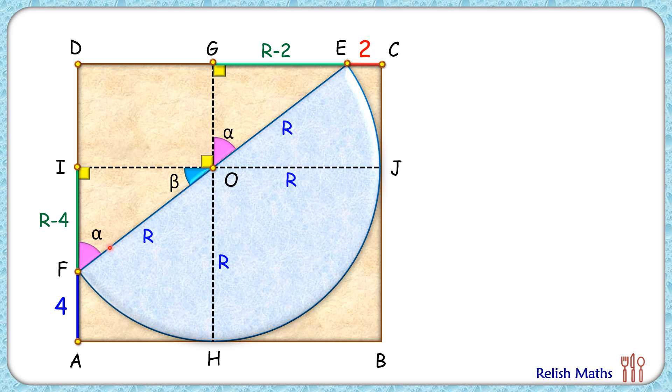Now by angle-angle-side, that's 90 degrees, alpha, and r cm, we can say that this triangle and this triangle are congruent. As triangles are congruent, corresponding sides will be equal, thus IO length equals GE length, or r-2.